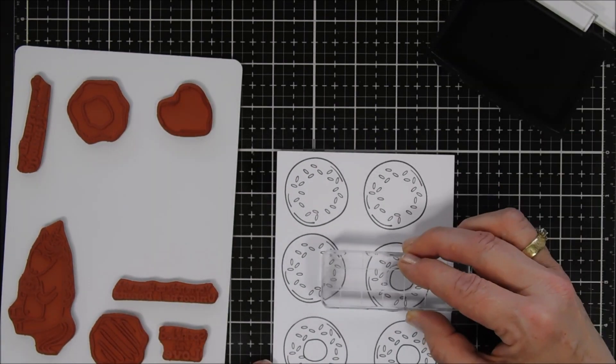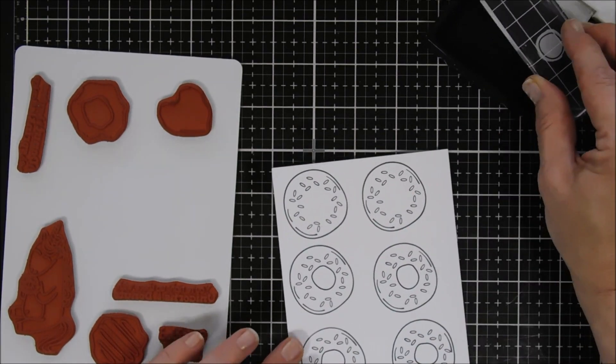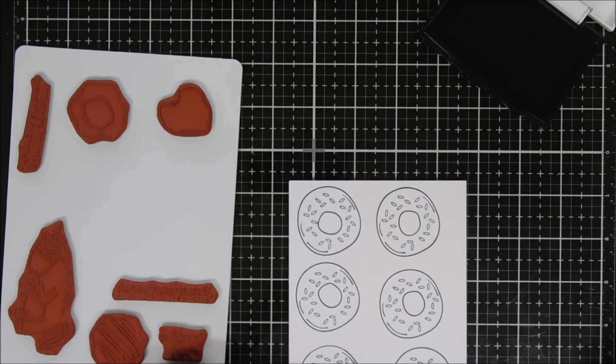Now we're going to stamp our donut center, not in the center at all. We're off-centering it and that was not intentional, but this is probably how our donuts would look if we made them here at the house. Very natural looking, we're going to call them.